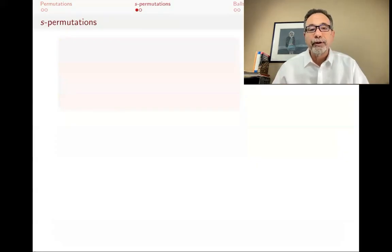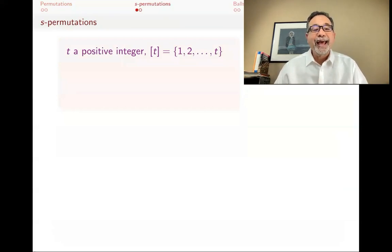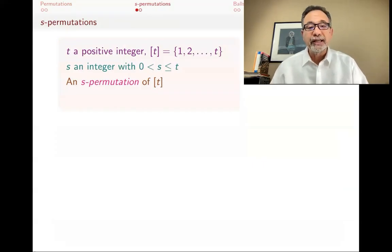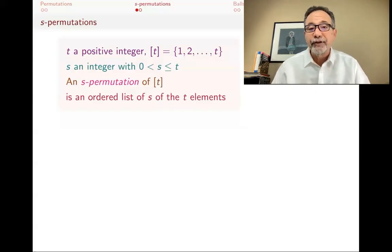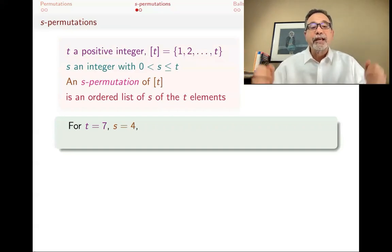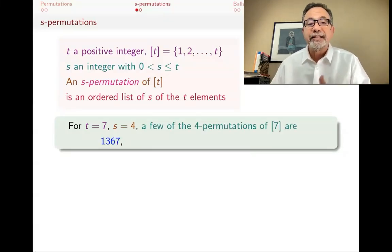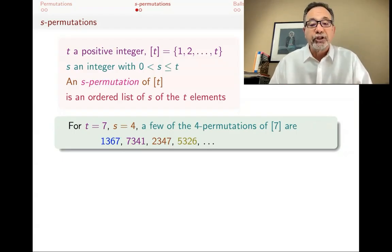We want to generalize things and talk about S-permutations. What if you have a set with T elements? Bracket T is going to be our set with T elements, and S is some integer between zero and T. An S-permutation of T means: pick S elements out of the T elements and find a permutation of them — it's an ordered list of S of the T elements. For example, if T is seven and S is four, the ambient set has seven elements, but every time we're only going to take four of them and make permutations. Among those permutations are things like 1, 3, 6, 7 and 7, 3, 4, 1 and 2, 3, 4, 7 and 5, 3, 2, 6. These are some of the four-permutations of bracket seven.